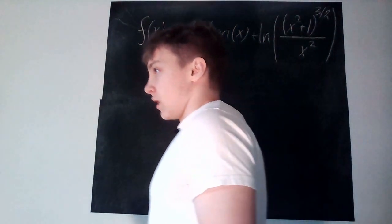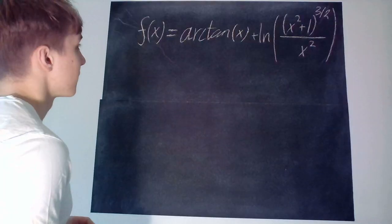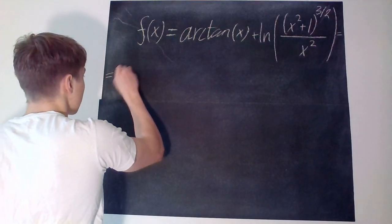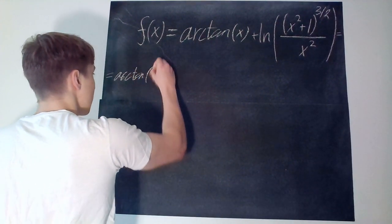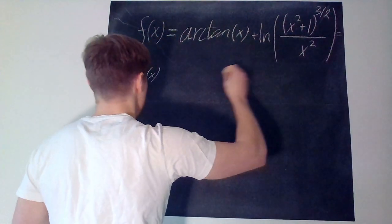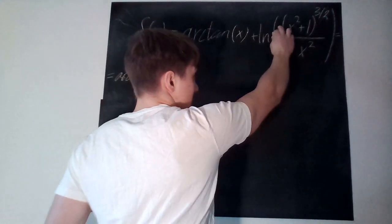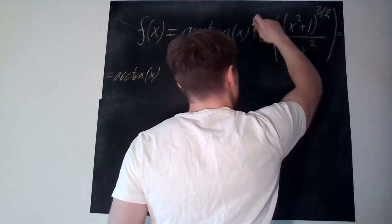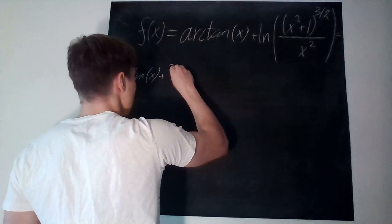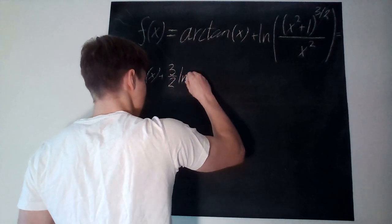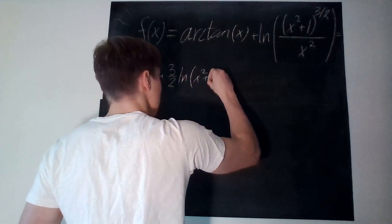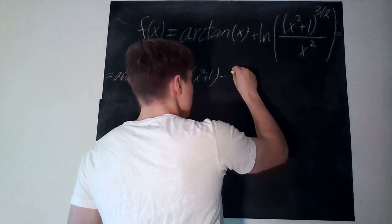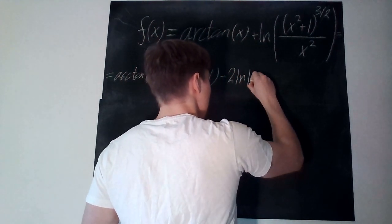What the fuck do we do? Firstly, we can simplify. We should use some logarithmic rules right here. Arctan, of course, stays the same. But we can split this up in two. We have ln of something over something — it's the denominator minus the numerator. And then we have a power, so we can move that in front. So we have plus 3/2 of ln of (x² + 1).